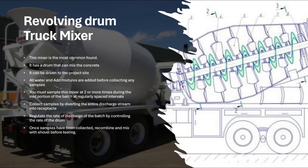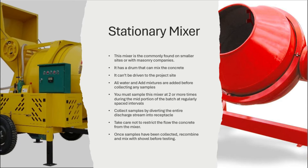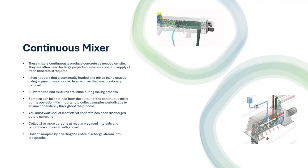There are five types of mechanical mixers. One: revolving drum truck mixer. Two: stationary mixer. Three: continuous mixer. These three will be sampled at the mid portion at two or more regularly spaced intervals. Four: paving mixer — this will be sampled after discharge from five locations around the discharge. Five: open top mixer — this will be sampled by the best method from the previously mentioned mixers.